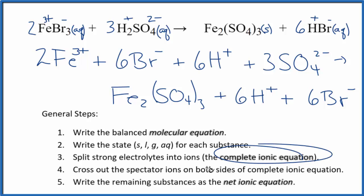This is the complete ionic equation. Now we can cross out those spectator ions that are on both sides. So we have our reactants and our products. In our reactants, I see 6 bromide ions here and in the products. Those are spectator ions.